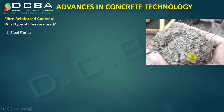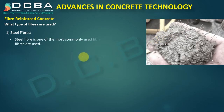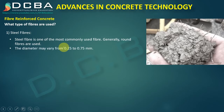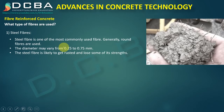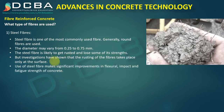There are different types of fibers used in concrete. The first and most common is steel fiber. These are round in cross section, with diameter varying from 0.25 to 0.75 mm. Steel fiber is likely to get rusted and lose some strength, but it has been observed that rusting only occurs on the outside — the inside of the fiber remains intact. Use of steel fiber makes significant improvements in flexural, impact, and fatigue strength of concrete.